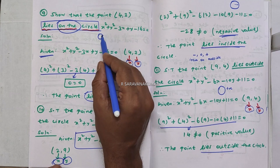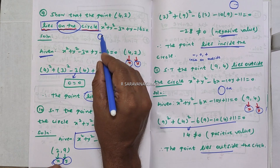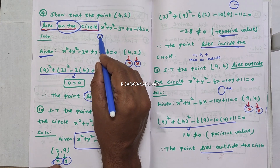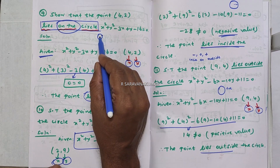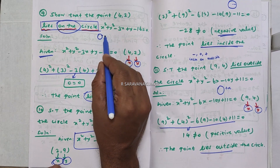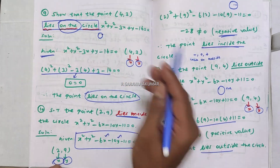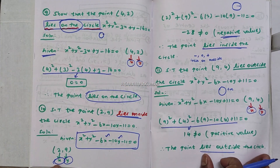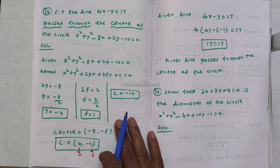To summarize: if the result equals zero, the point is on the circle; if the result is negative, the point is inside the circle; if the result is positive, the point is outside the circle.